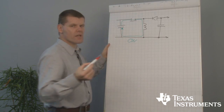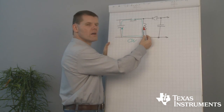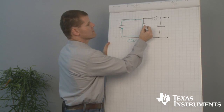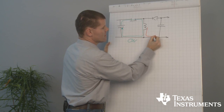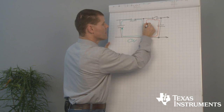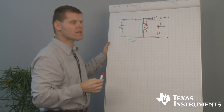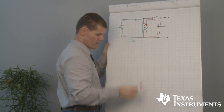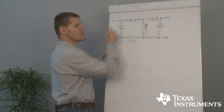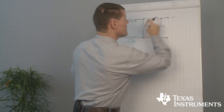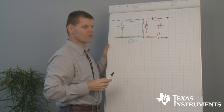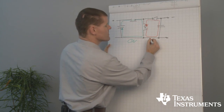In the off-state, the current in the inductor cannot stop instantly. So the current will be forced through the output capacitor and through the rectifier. This results in turning the positive input voltage into a negative output voltage. That's our off-state.